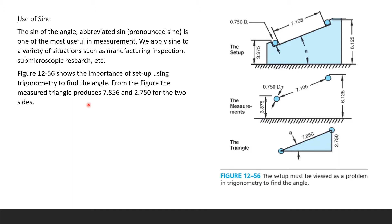The use of sine: the sine of the angle, abbreviated S-I-N, is one of the most powerful and useful measurements. We apply sine to a variety of situations such as manufacturing, inspection, sub-microscopic research, and so on. In this example, you can see the importance of setup. Using trigonometry to find the angle, setting up is about finding a triangle, especially a right triangle, so that we can use a trig function to get the measurement of that angle.